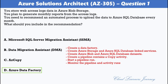You can create data factory pipelines that copy data from Azure Blob Storage to Azure SQL Database. This configuration pattern applies to copying from a file-based data store to a relational data store. The required steps are: create a data factory, create Azure Storage and Azure SQL Database linked services, create Azure Blob and Azure SQL Database datasets, create a pipeline containing a copy activity, start a pipeline run, and monitor the pipeline and activity runs.